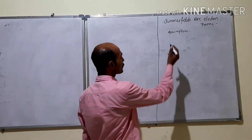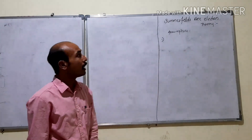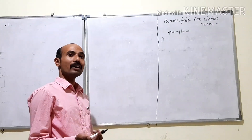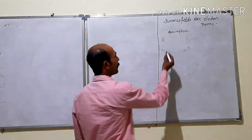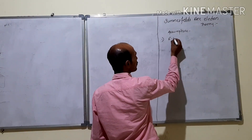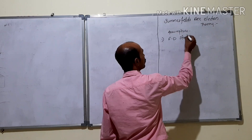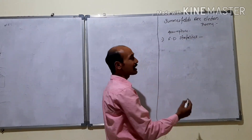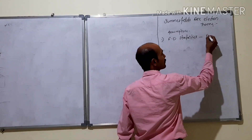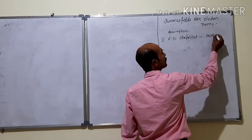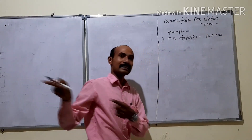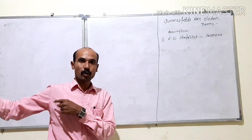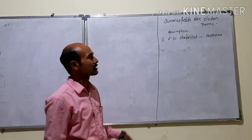We will first see the assumptions of the Sommerfeld free electron theory. According to this theory, the electron obeys Fermi-Dirac statistics — that is FD statistics. And hence, the electrons are called fermions. In the classical free electron theory, they obeyed Maxwell-Boltzmann statistics, but here they obey Fermi-Dirac statistics.